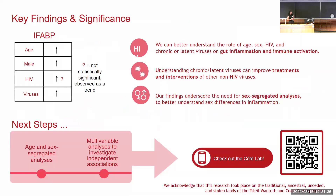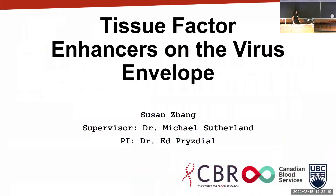To summarize, we found significant age, sex, and virus-specific differences, with men exhibiting higher levels of not only IFAB but all inflammatory markers. Moving forward, we will perform segregated and multivariable analyses to investigate the independent associations of these factors, as well as ethnicity and substance use. We hope these findings will better our understanding of factors affecting HIV and potentially help slow down accelerated aging for people living with HIV. Please visit my poster — I'll be at number 19. Thank you.